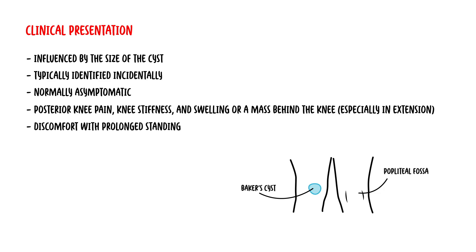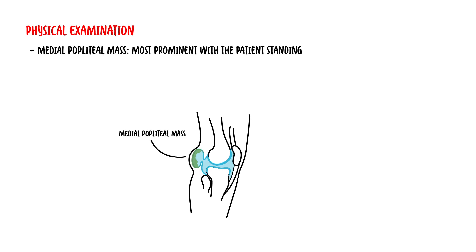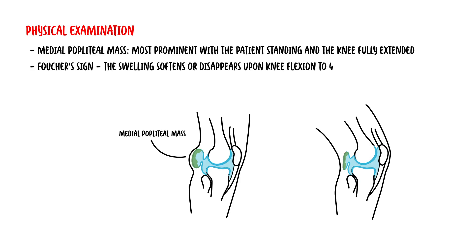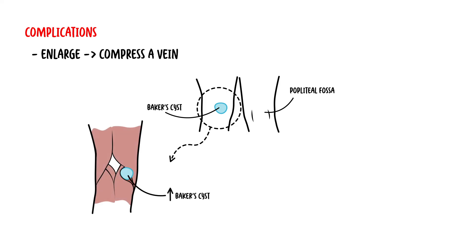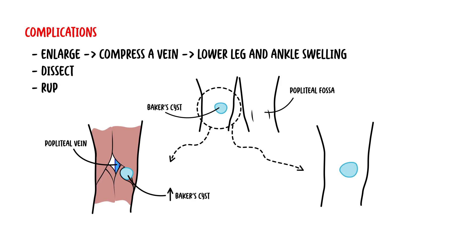Patients frequently report discomfort with prolonged standing and with hyperflexion of the knee. On physical examination, there can be a medial popliteal mass that is most prominent with the patient standing with the knee fully extended. Foucher's sign is where you have swelling that softens or disappears when the knee is flexed to 45 degrees. If the cyst enlarges, it can compress adjacent structures such as the vein, causing lower leg and ankle swelling due to venous obstruction. Other complications include dissection or rupturing of the cyst, which can cause erythema and swelling around the area, potentially being misdiagnosed as a deep vein thrombosis.